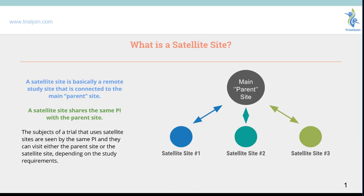Typically a PI or a research site owner can talk to a sponsor and CRO and let them know that they have a secondary practice they'd like to enroll and create into a satellite site. The reason CROs and sponsors appreciate this is because they already know the working relationship with you and how your practice is run, so they will gladly allow you the opportunity to set up a satellite site.